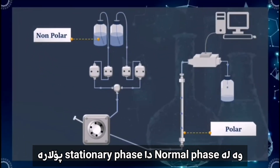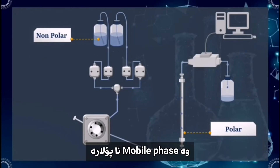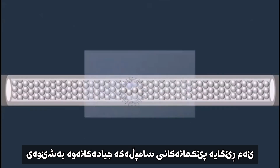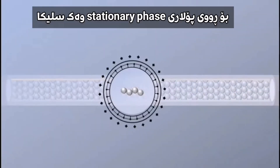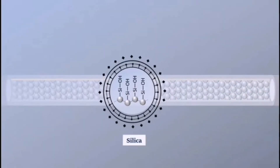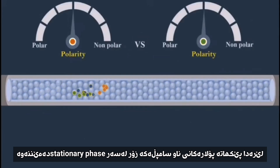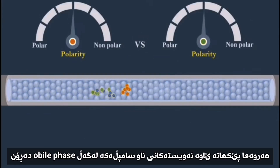In normal phase chromatography, the stationary phase is polar and the mobile phase is non-polar. This method separates analytes based on their affinity for a polar stationary surface, such as silica. In this case, the more polar the analytes are, the more retained they will be on the stationary phase. The more hydrophobic they are, the more they will prefer the mobile phase.